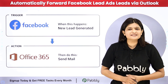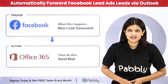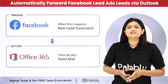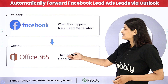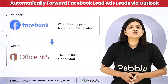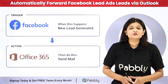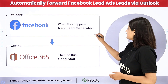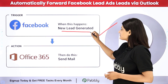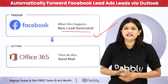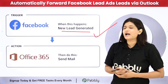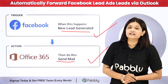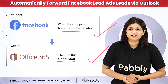Let's suppose I am running a real estate agency and collecting all my leads with the help of Facebook Lead Ads, and then I am manually forwarding all these leads to Outlook. I want to completely automate this process. Here my trigger application will be Facebook Lead Ads where the new lead will be generated, and in my action application I will take Outlook where the mail will be sent automatically.